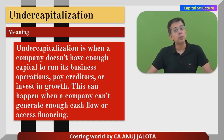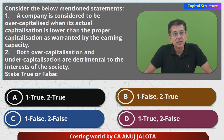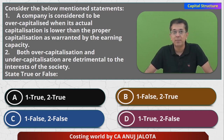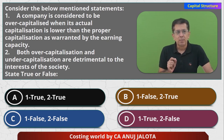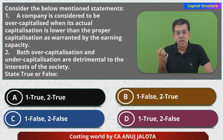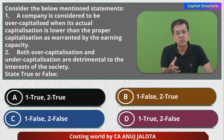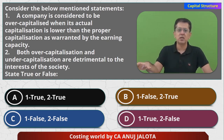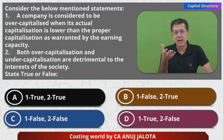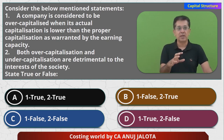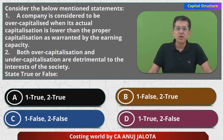Coming back to the question — the first statement says a company is considered to be over-capitalized when its actual capitalization is lower than proper capitalization as warranted by the earning capacity. This statement is FALSE. Over-capitalization means the company's actual capital is higher than the capitalization warranted by its earning capacity. We raised 1000 crores but are only using 600 crores, earning on only 600 crores — rest 400 crores is idle. So first statement is false, which means options A and D cannot be correct.